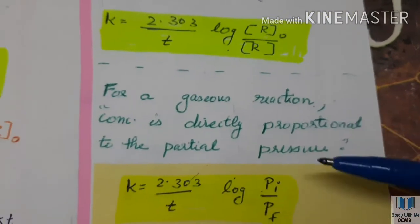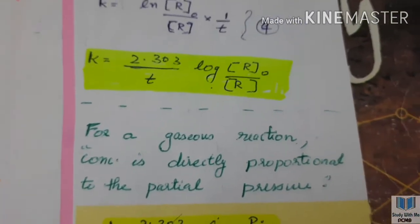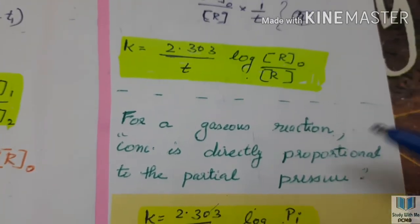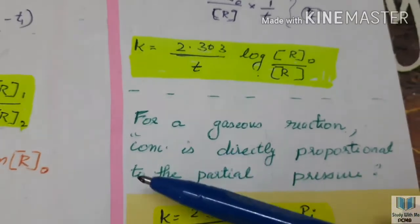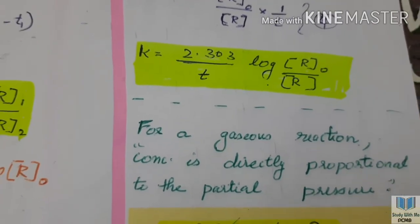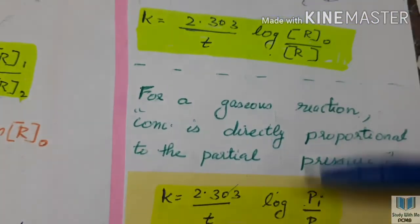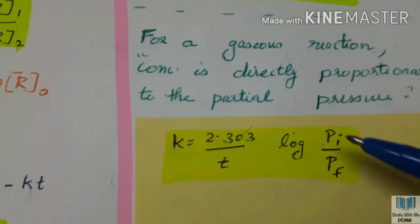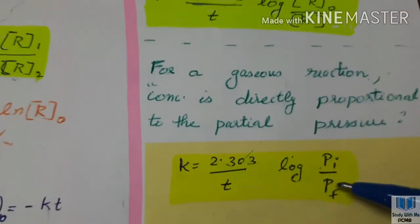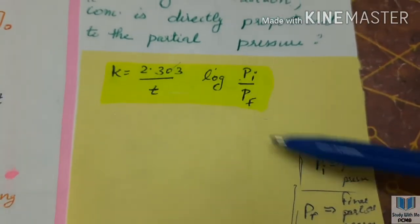Next is the condition for a gaseous reaction. In a gaseous reaction, concentration is directly proportional to the partial pressure of that species. So the equation becomes k equals 2.303 divided by T, times log of Pi divided by Pf, where Pi is the initial partial pressure and Pf is the final partial pressure.